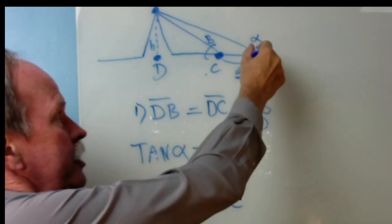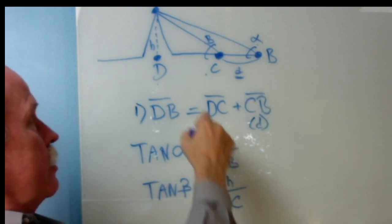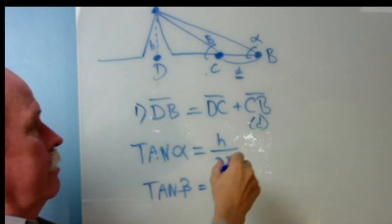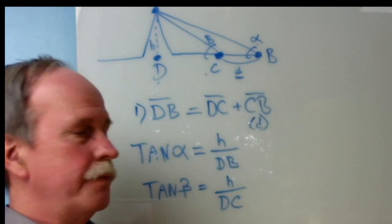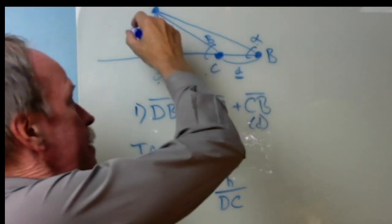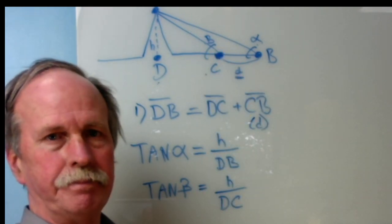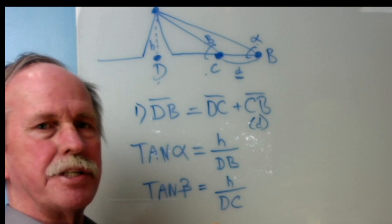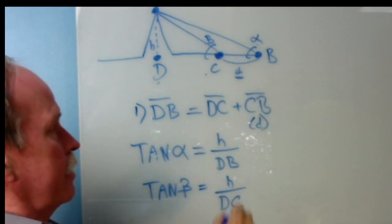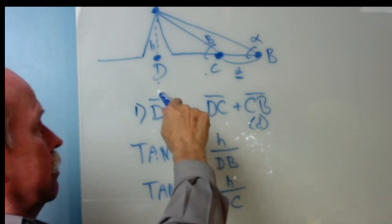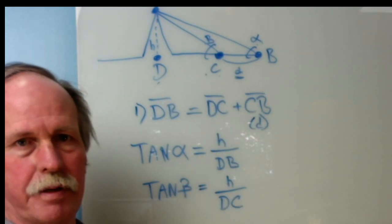Here's the tangent. The tangent of angle alpha which is the far angle on the right is going to be the height of the mountain over DB. Recall the tangent is the opposite over the adjacent. That's the TOA. Now likewise tangent at angle B is going to be the height of the mountain over DC which is that segment of the line.